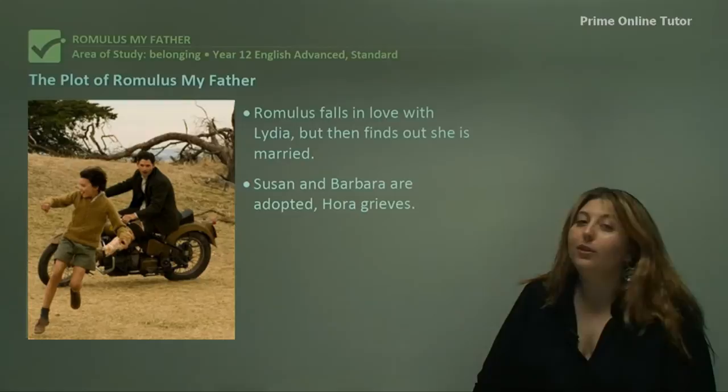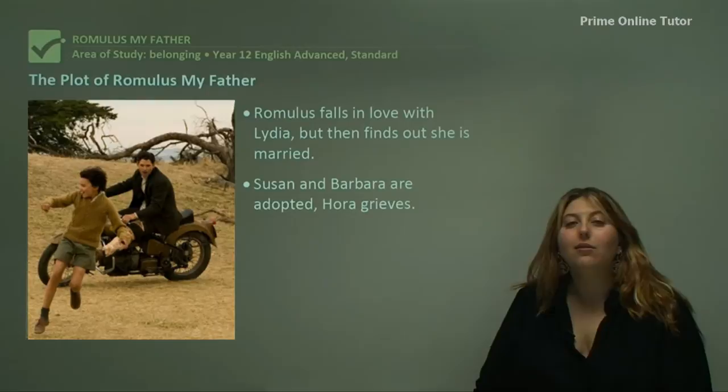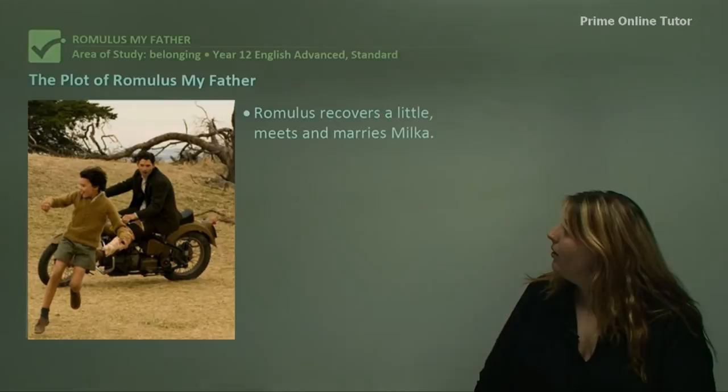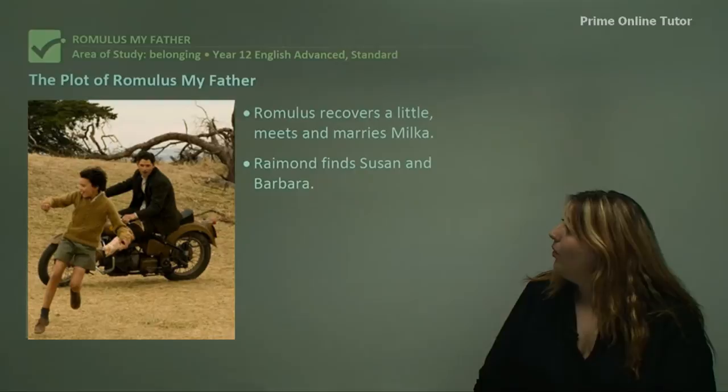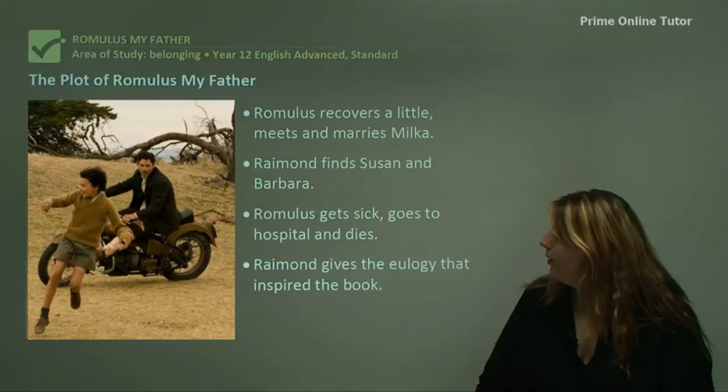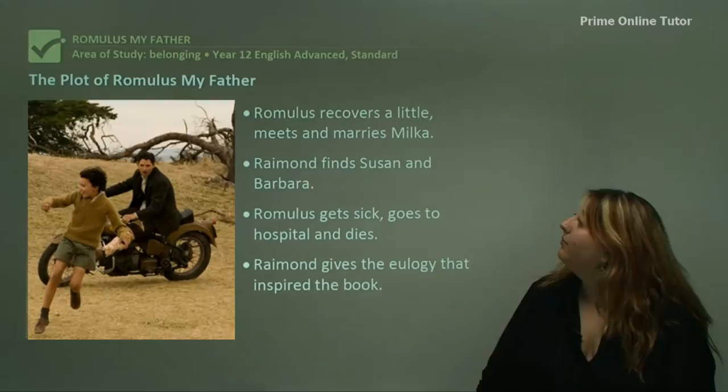Romulus falls in love with Lydia but then finds out that she's actually married. Susan and Barbara, the two children that Mitru and Christine have together in Melbourne, are adopted and Hora, who is their uncle, grieves for this loss. Romulus has mental health issues of his own and Raymond goes to visit him in the psychiatric hospital in Ballarat. Romulus recovers a little bit and then meets and marries Milka. Raymond finds Susan and Barbara and tries his best to reunite the family. Romulus gets sick, goes to hospital and dies quite quickly. Raymond then gives the eulogy that was the inspiration for the book Romulus My Father.